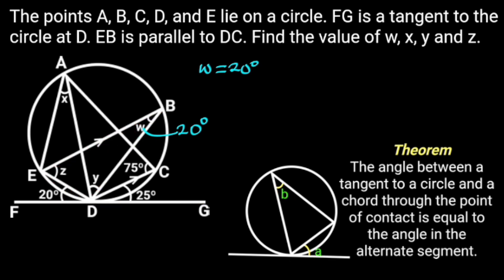Using the same theorem, we can find angle X, because the same chord also made an angle at point A in the alternate segment. And this angle is X, which can be observed from triangle ADE. So we can say that X equals 20 degrees, and the reason is angle in the alternate segment.